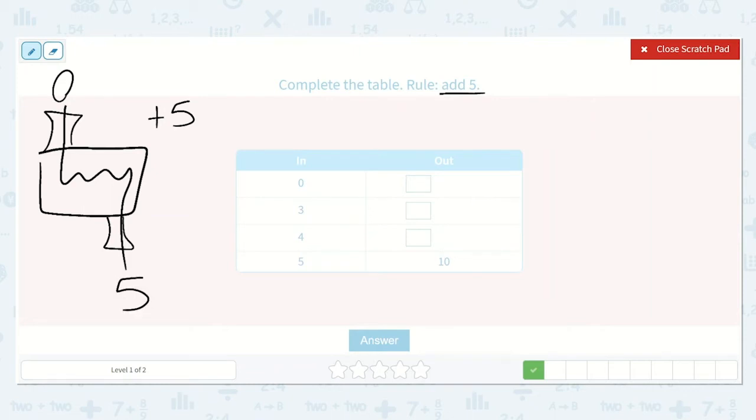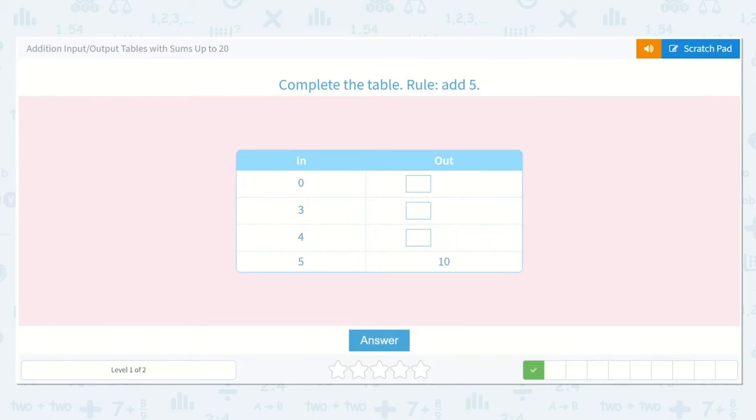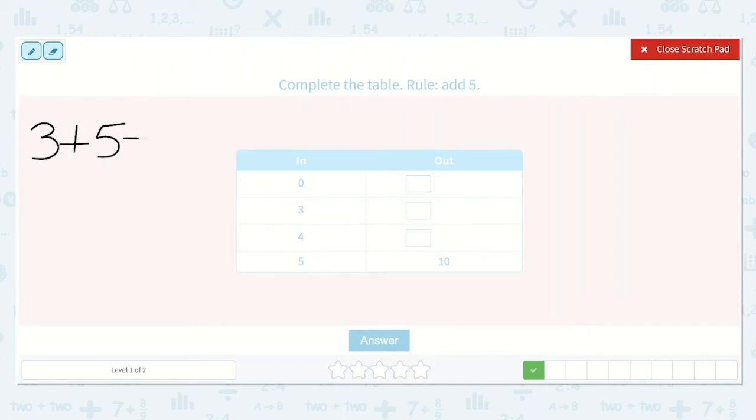So it takes in zero, does something to the number, and then spits it back out. In this case, it added five. So zero, five. Three, all right, so if we put three in, and then we added five, so we could just do three plus five. So I know five, six, seven, eight. So eight would be this one. We know that zero was five, three is eight.